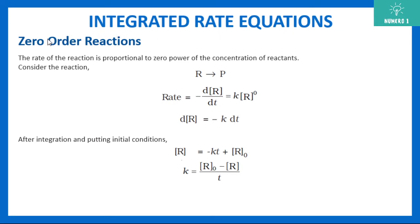First things first, that is for zero order reaction. Let us assume that the reaction we have is R gives you product P. Since it is a zero order reaction, the rate of reaction is proportional to the zeroth power of concentration of reactant. That means rate is given by: minus dR/dt equals k times R raised to power 0. R raised to power 0 is 1, and shifting dt and the minus sign to the other side gives: dR equals minus k dt.